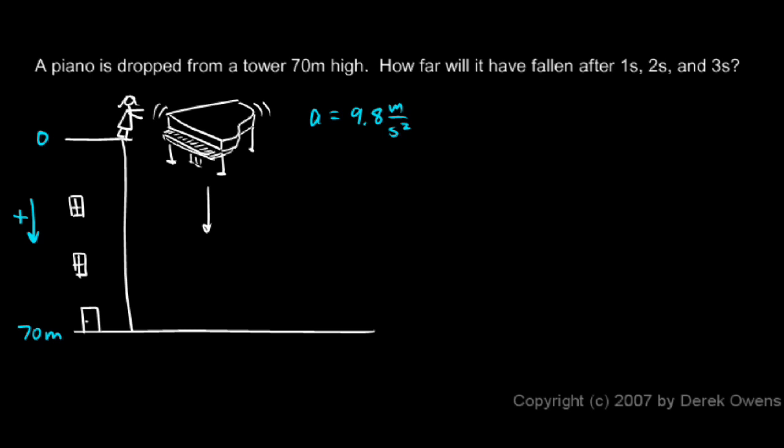The fact that down is positive means that the acceleration is positive 9.8 meters per second squared. Because gravity always pulls down. And in this case, down is positive. Now, with those ideas in mind, let's set up and solve the problem.